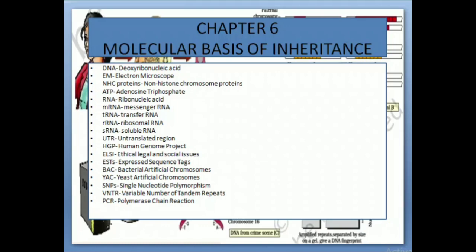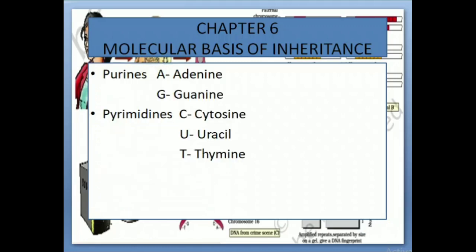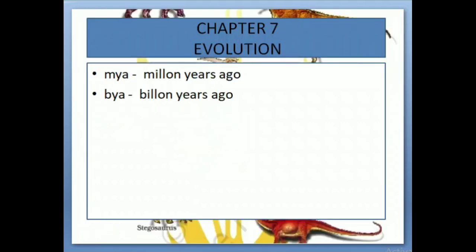BAC: Bacterial Artificial Chromosomes. YAC: Yeast Artificial Chromosomes. SNPs: Single Nucleotide Polymorphism. VNTR: Variable Number of Tandem Repeats. PCR: Polymerase Chain Reaction. Purines — A: Adenine, G: Guanine. Pyrimidines — C: Cytosine, U: Uracil, T: Thymine. Chapter 7.